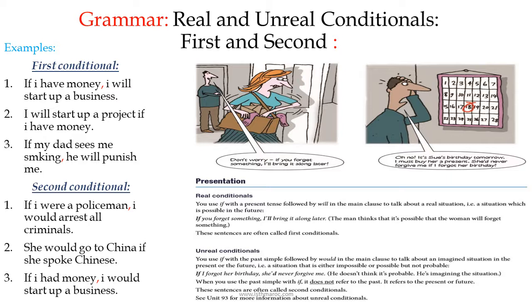Now we go to the presentation for more detail. The picture shows: 'Don't worry, if you forget something I'll bring it to you later.' And: 'Oh no, it's Sue's birthday tomorrow, I must buy her present.' Real conditionals: you use 'if' with a present tense followed by 'will' in the main clause to talk about a real or possible situation in the future. These sentences are called first conditionals.